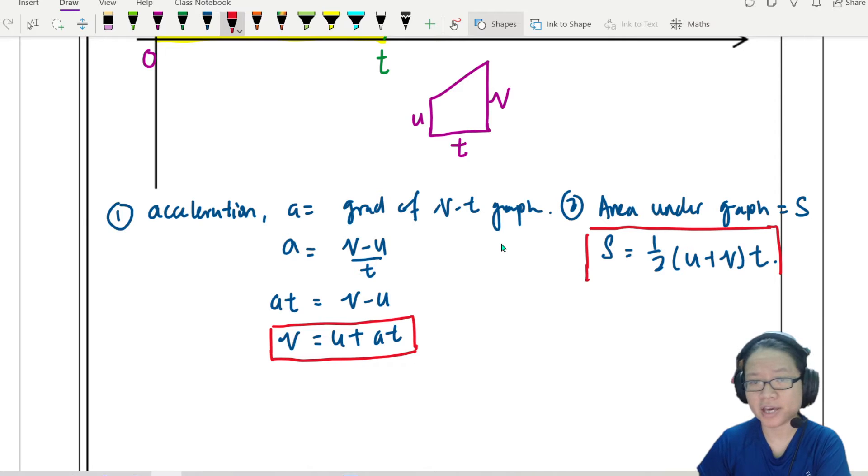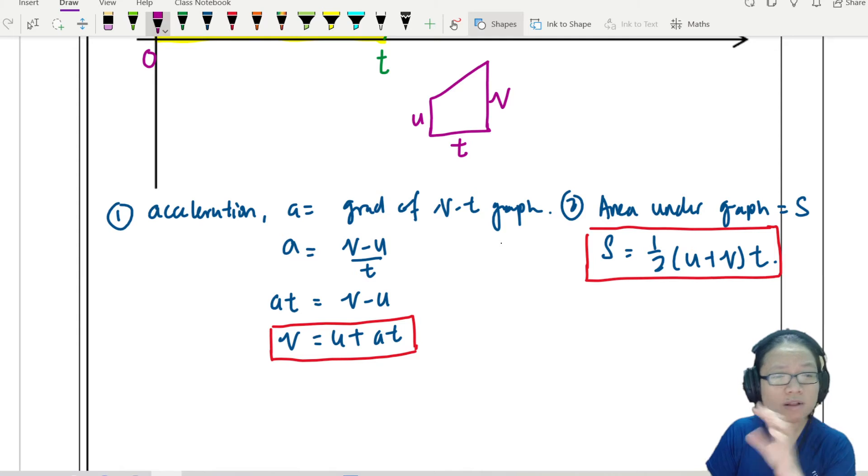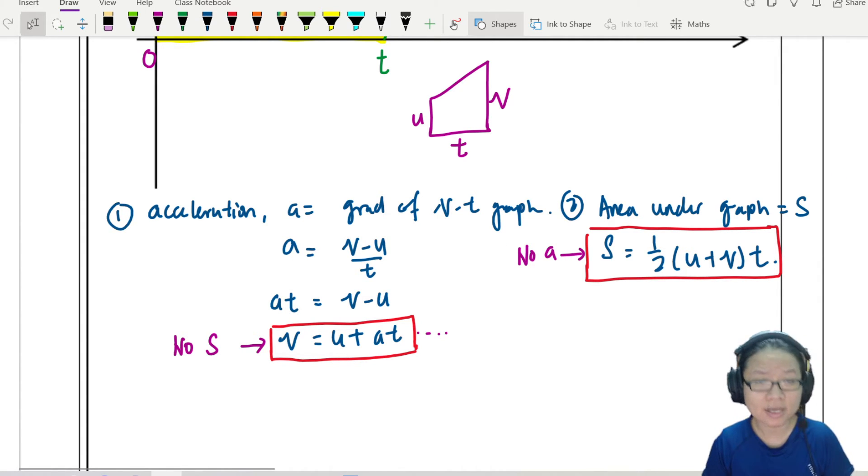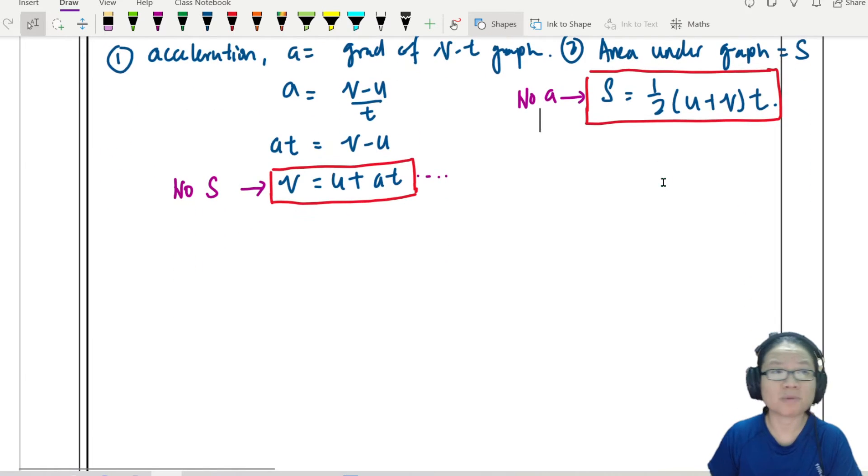So instead of drawing a graph and estimating the area or the gradient, you can directly use these two equations. But you see, there are some other equations that are missing. Because whenever we try to come up with a set of equations, we are trying to think of whether the equations are useful or not. So let's look at the first v equal to u plus at. This equation has no terms in s. So if, let's say for example, you don't have information about the displacement, you should use this equation. You can still find maybe the time taken for it to change its velocity or maybe its acceleration. Just like this equation has no terms in a. Meaning if you don't have any information about acceleration, you can still find the displacement or the speeds or the velocities. So then, just to be fair, maybe we should find or substitute the equation so that we have an equation with no v. That will be my third equation.